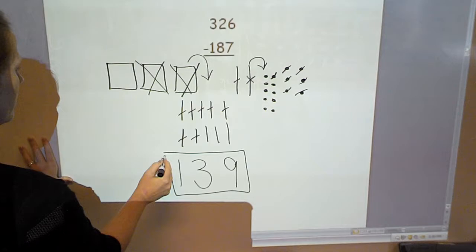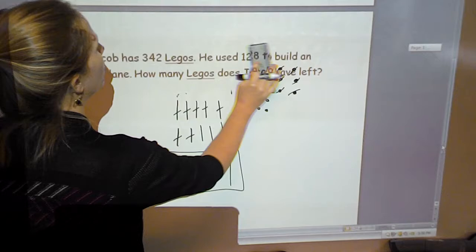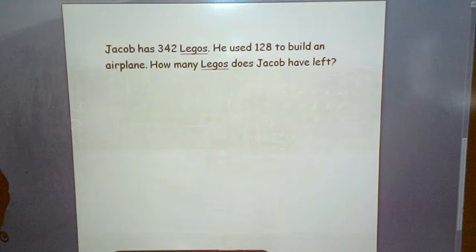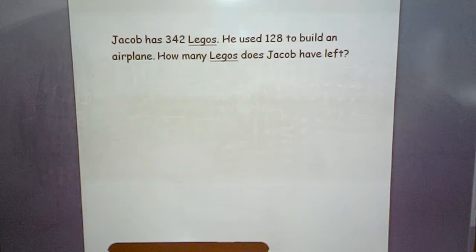Let's practice another problem in a story problem. So we're going to practice one more and then you can try it out on your own. Jacob has 342 Legos. He used 128 to build an airplane. How many Legos does Jacob have left?